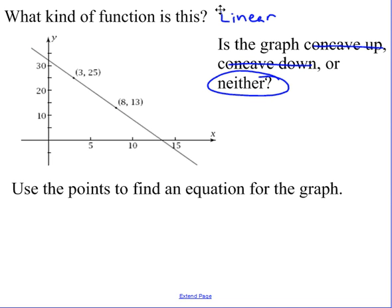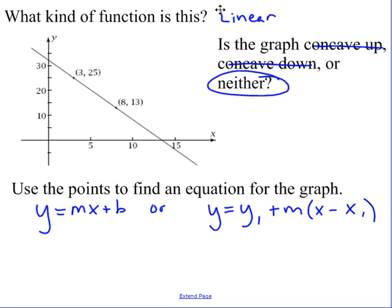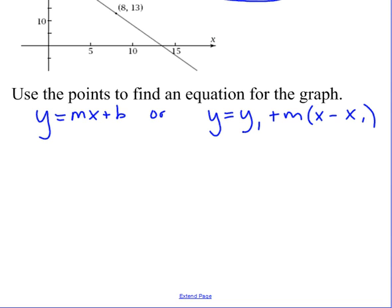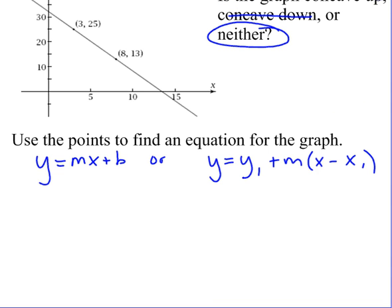When we're using points to find the equation of a line, we are used to y equals mx plus b, or point slope form, which is y equals y1 plus m times x minus x1. Either way, when we're looking at the equation of a line, we need to be able to find the slope.